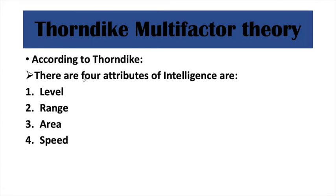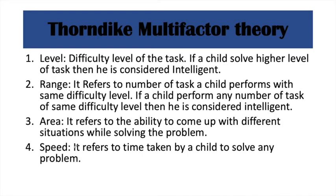Thorndike also said that this intelligence has four attributes on the basis of which we measure a person's intelligence level. Number one is level, number two is range, number three is area, and number four is speed. Level refers to the difficulty level of the task — for example, if a child is six years old but can solve problems of eight-year difficulty, they are considered intelligent.